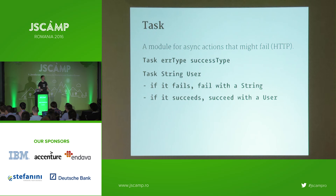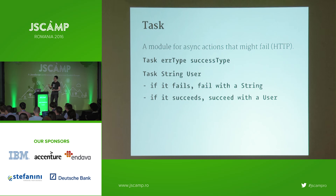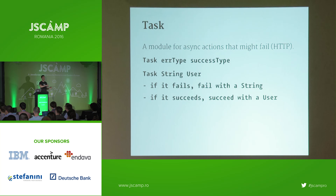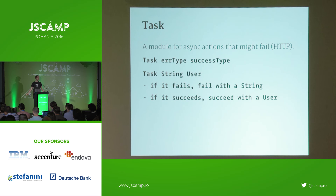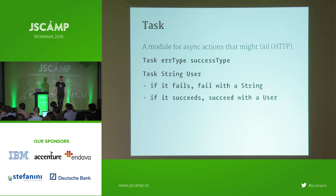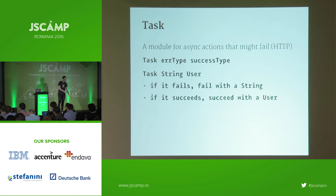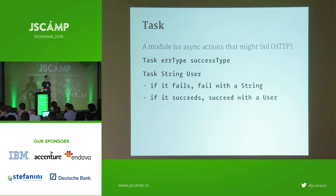Elm also has a type called Task for dealing with asynchronous actions that might fail — most commonly HTTP. When you create a task, you parameterize it with two types: 'Task String User' reads as a task that will fail with a String or succeed with a User type. You have to deal with errors — you can't just forget the dot-catch like with a Promise. If you do want to not deal with errors, you at least have to write explicit code to ignore them, so you can't accidentally forget.